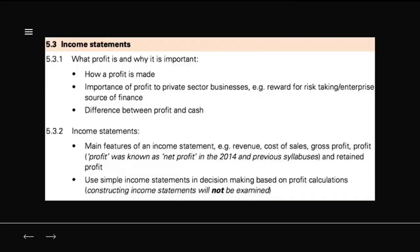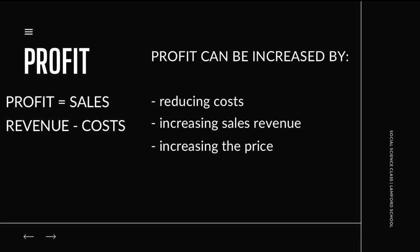Now here's the syllabus for this topic. We will learn what profit is, why it is important, and we will look at the main features of an income statement. Profit is calculated by the sales revenue — the revenue earned from selling goods — minus the costs of the business. Profit can be increased by reducing costs, by increasing sales revenue, or by increasing the price charged to consumers, which increases revenue.